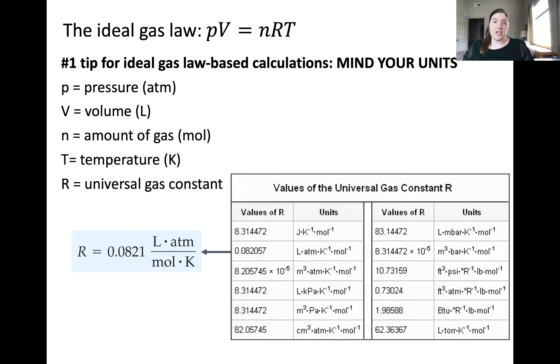The ideal gas law shows the mathematical relationship between these four variables with the constant R, that collectively describe a gas system when modeled using the ideal gas law.